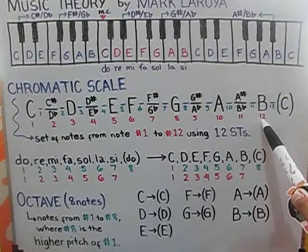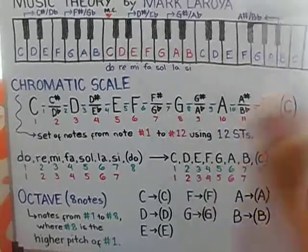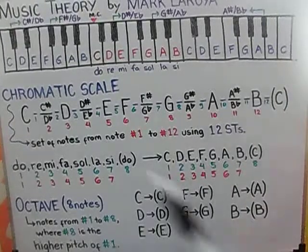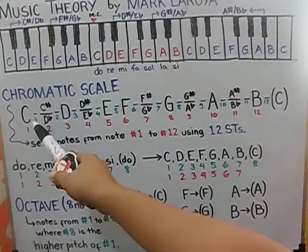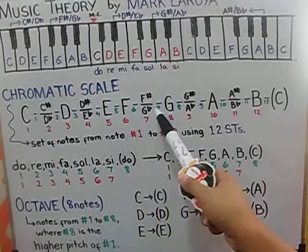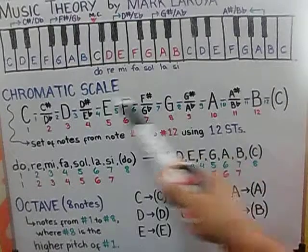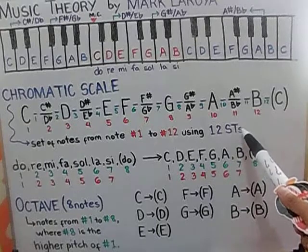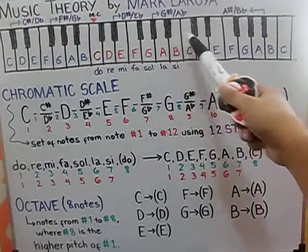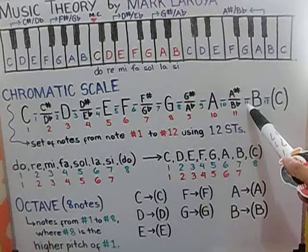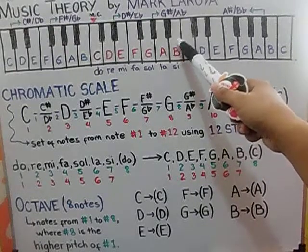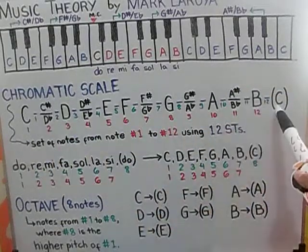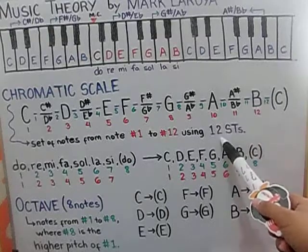But how many semitones you already have? So, from C to B, we only have 1, 2, 3, 4, 5, 6, 7, 8, 9, 10, 11. These green numbers represent the number of semitones we use. So, therefore, up to B, we only have 11. So, we still have 1 left. So, from B, a semitone going to C. So, therefore, from C to C, we have 12 semitones.